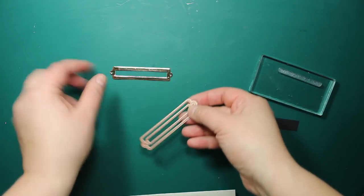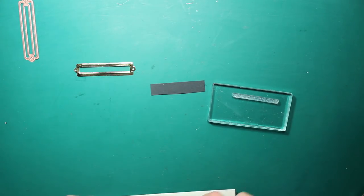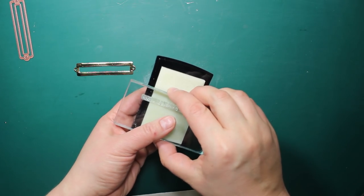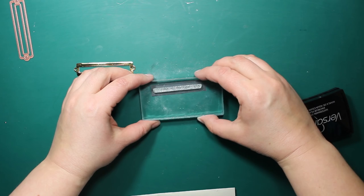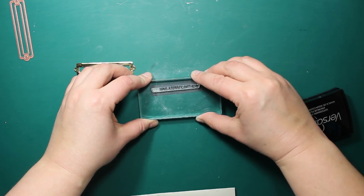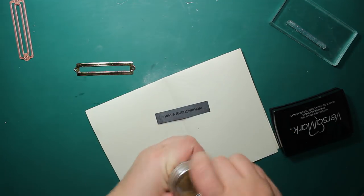To frame the sentiment, I'm going to use this open tag by Spellbinders cut out of gold. I'm going to emboss my sentiment on a strip of black paper. The stamp is by Poppy Stamps, the ink is VersaMark, and the embossing powder is gold by Ranger.